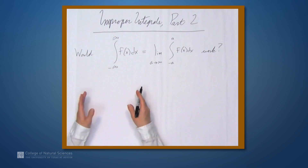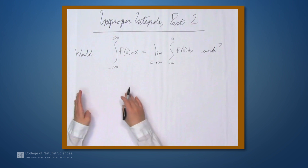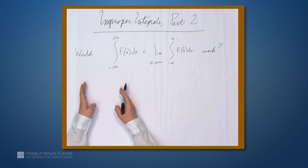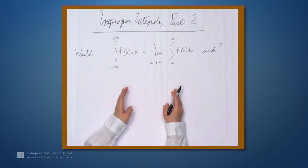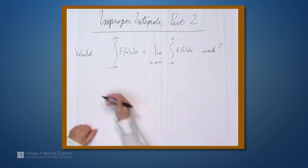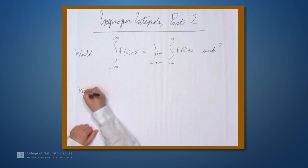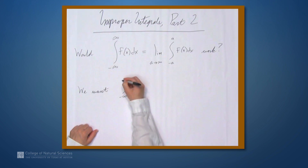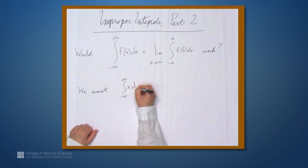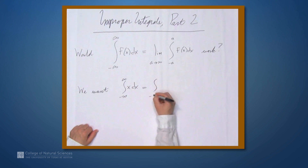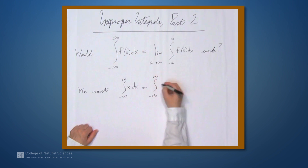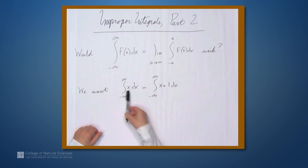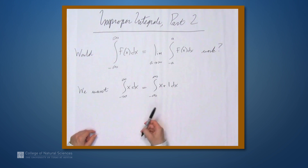We know that integration should be fixed by shifting the function. If we're integrating from negative infinity to infinity and we shift f over a little bit, we should still get the same answer. So for example, we want the integral from negative infinity to infinity of x dx to be equal to the integral from negative infinity to infinity of x plus 1 dx, because we're just shifting x over to get x plus 1.